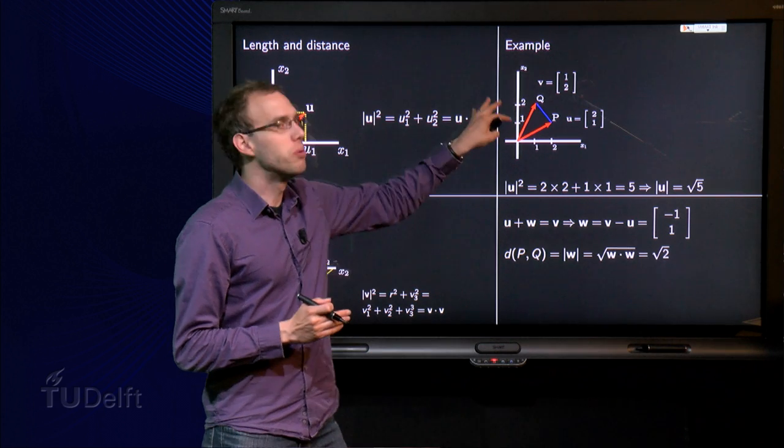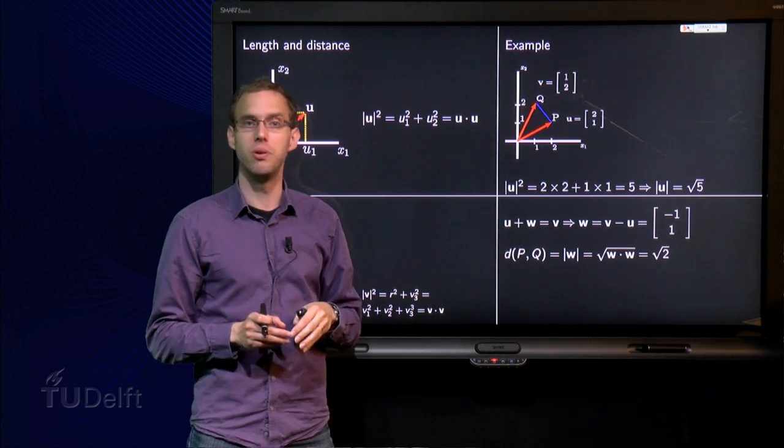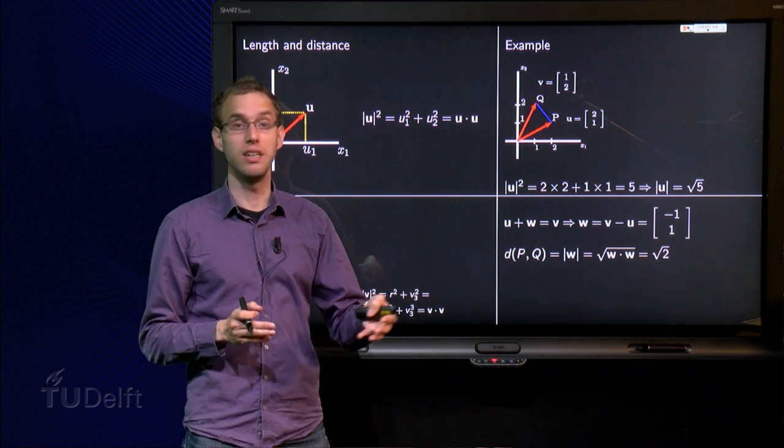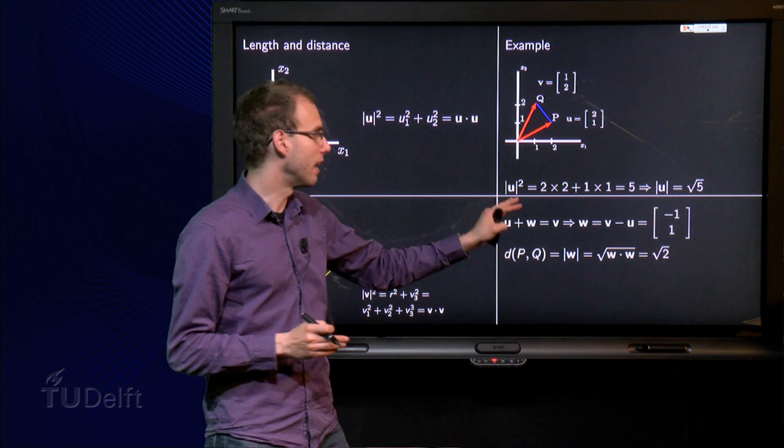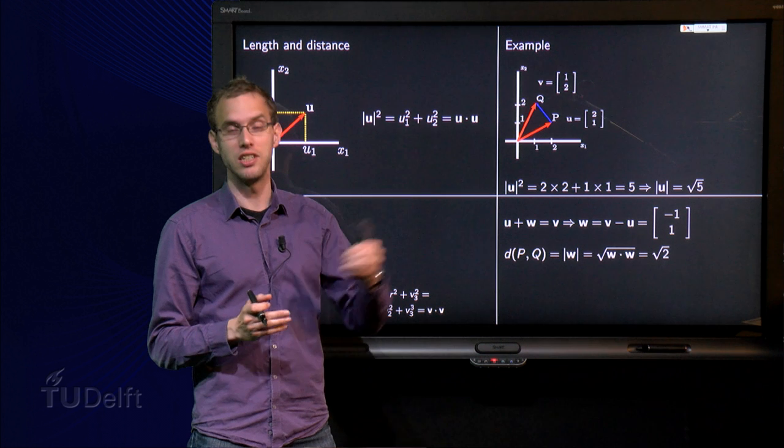I know in R2 you can already do this with other methods too, but especially if you go to higher dimensions, R3 or R4, then it is really convenient if you use the inner product to compute length and distances.